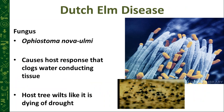The Dutch elm disease fungus is now called Ophiostoma nova-ulmi — 'nova' implying in Latin that it's new. The original fungus mutated into a more aggressive strain, prompting the name change from Ophiostoma ulmi to nova-ulmi. In the host tree, the fungus clogs up the water-conducting tissue — or more precisely, the tree clogs its own conducting tissue — so the tree looks like it's dying of drought, because water is no longer reaching the full extent of the crown.